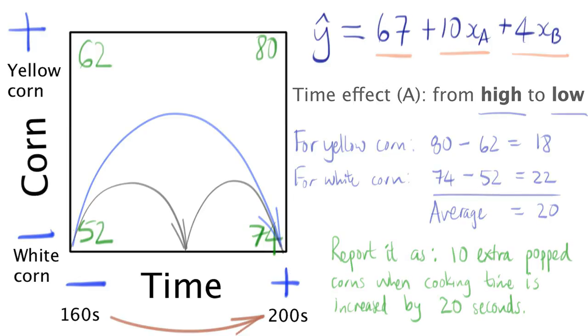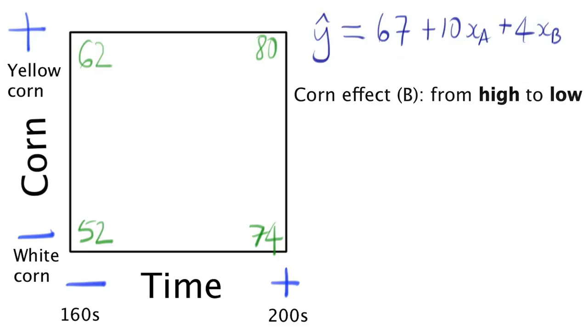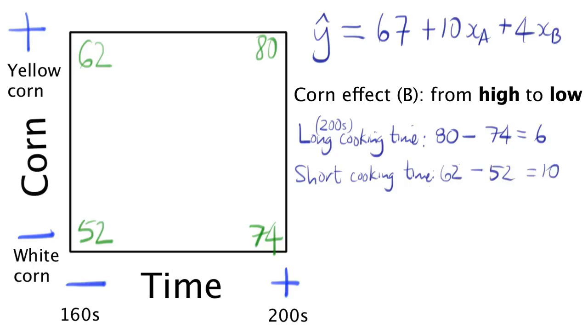Next consider the effect of popcorn type. Again, always go from high to low. So at long cooking times, this corresponds to 80 minus 74, that's 6. At short cooking times, this is 62 minus 52, which equals 10. The average of 6 and 10 is 8. So we conclude that an average of an 8 unit increase will happen when we change from white corn to yellow corn. We saw that in the previous class.